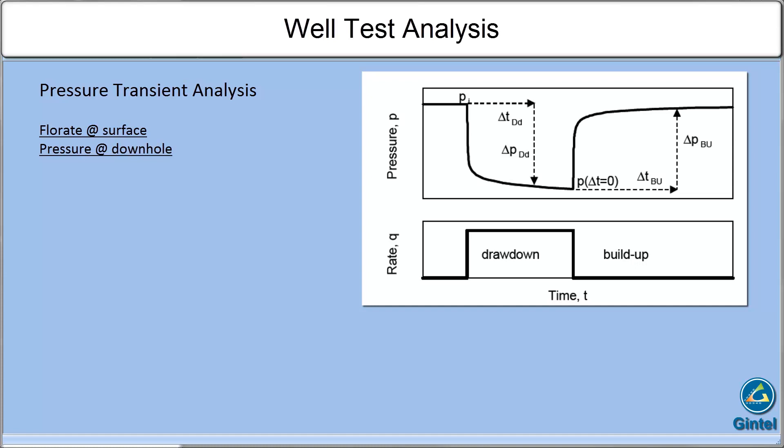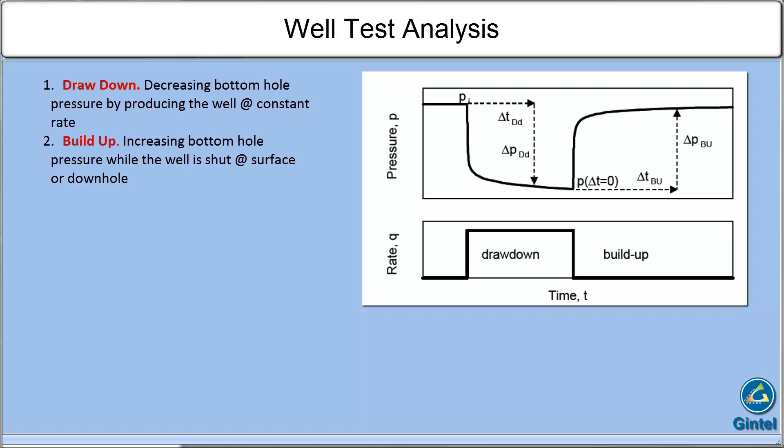There are two main types of well test: drawdown and buildup. The drawdown test decreases bottomhole pressure by producing the well at constant rate. A buildup test increases bottomhole pressure while the well is shut at surface or downhole.